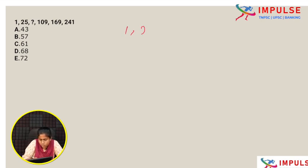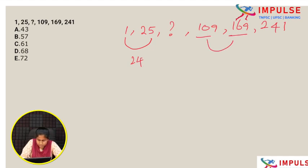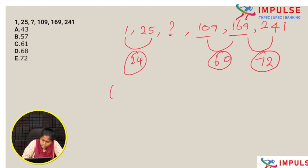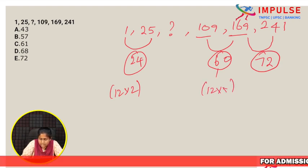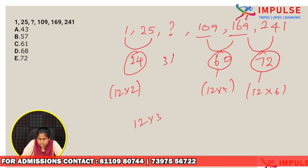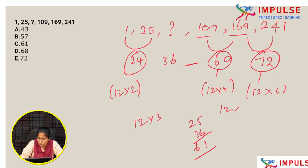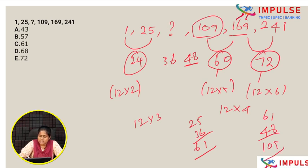Next question: 1, 25, ?, 109, 169, 241. The differences are: 25 minus 1 is 24, 109 minus 25... actually the differences follow the 12 times table: 24 is 12 × 2, then 12 × 3 = 36, 12 × 4 = 48, 12 × 5 = 60, 12 × 6 = 72. So 25 plus 36 is 61. Checking: 61 plus 48 = 109, which is correct. So the answer is 61. Option C.